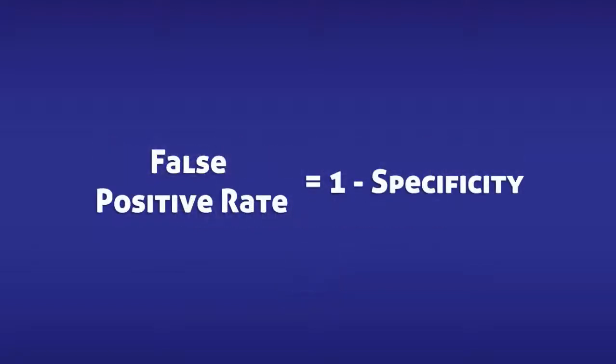The quickest way to calculate the false positive rate is to subtract 1 by the specificity of the test. However, if you do not know the specificity, then you can calculate the false positive rate by dividing the number of false positives by the total number of people with the condition.